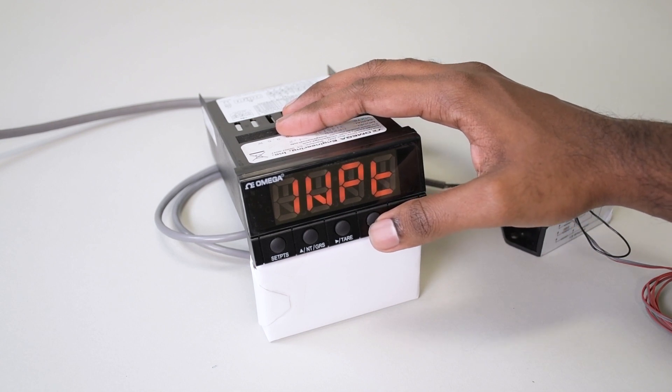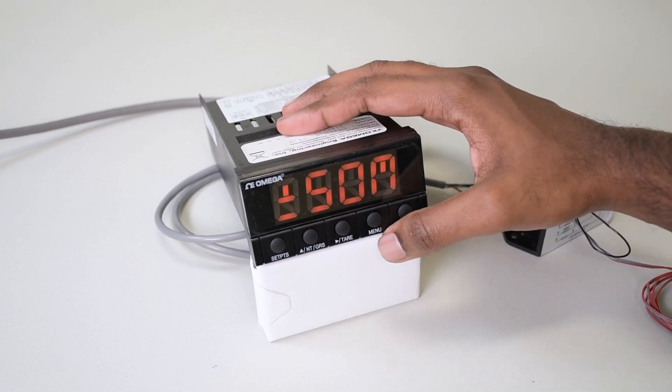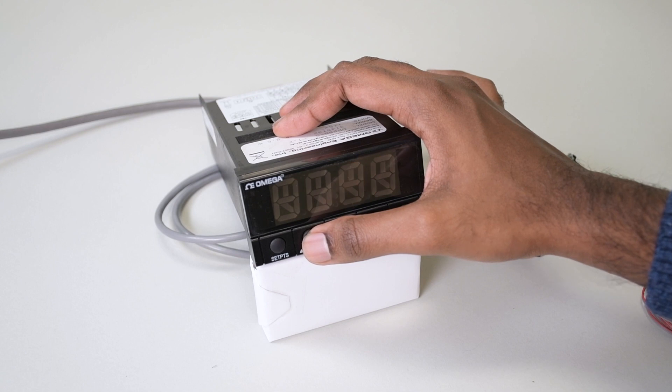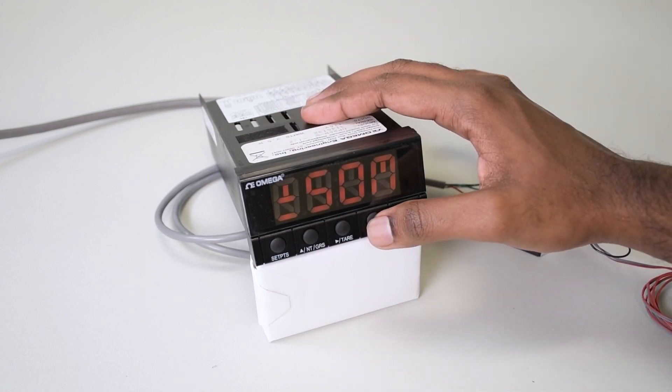You'll see INPT, which stands for input. Press the tare button once. You'll see a bunch of different ranges. Hit the NTGRS button to scroll through. We want to set it to read plus minus 50 millivolts. Press the menu button to save it.